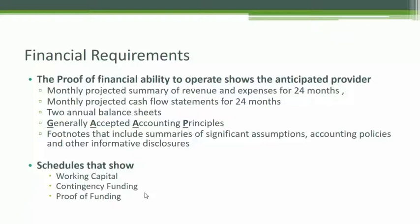Those are the rules that accountants must follow, and ACA requires a CPA to adhere to those rules. On top of that, there has to be several pages of footnotes. Footnotes are summaries of the assumptions, the accounting policies, and any other disclosure required by generally accepted accounting principles. On top of that, if you look at page one, you're going to see there's a working capital schedule, a contingency funding schedule and calculation, and a proof of funding.